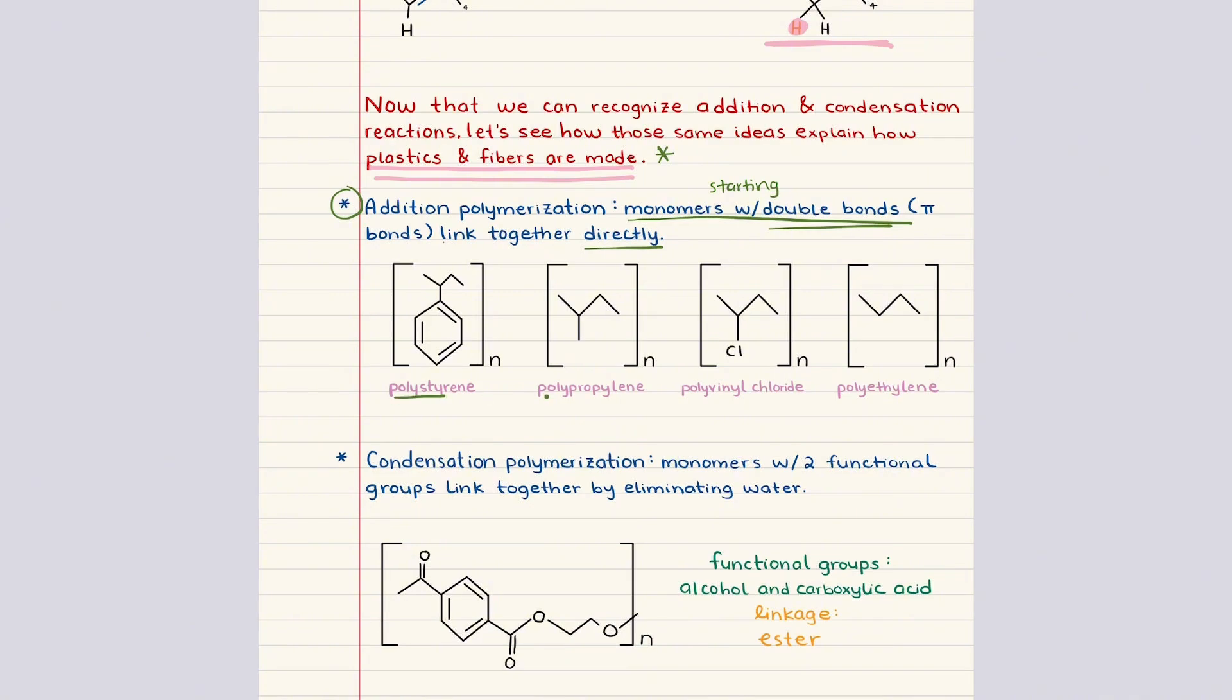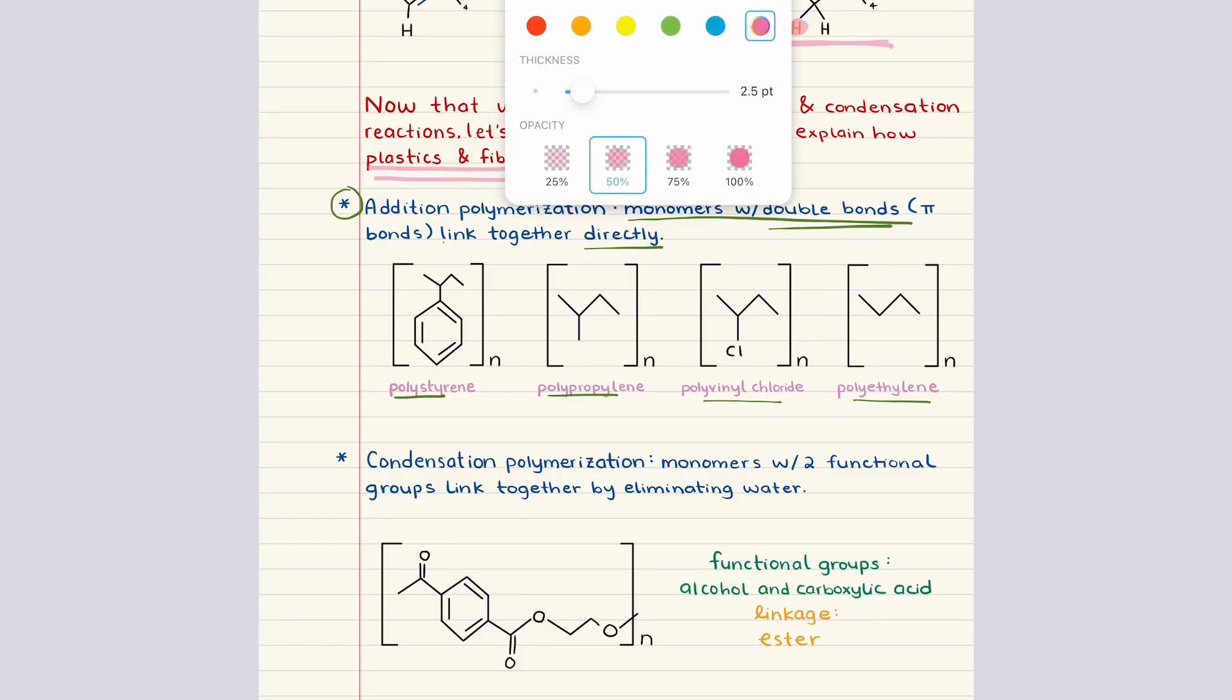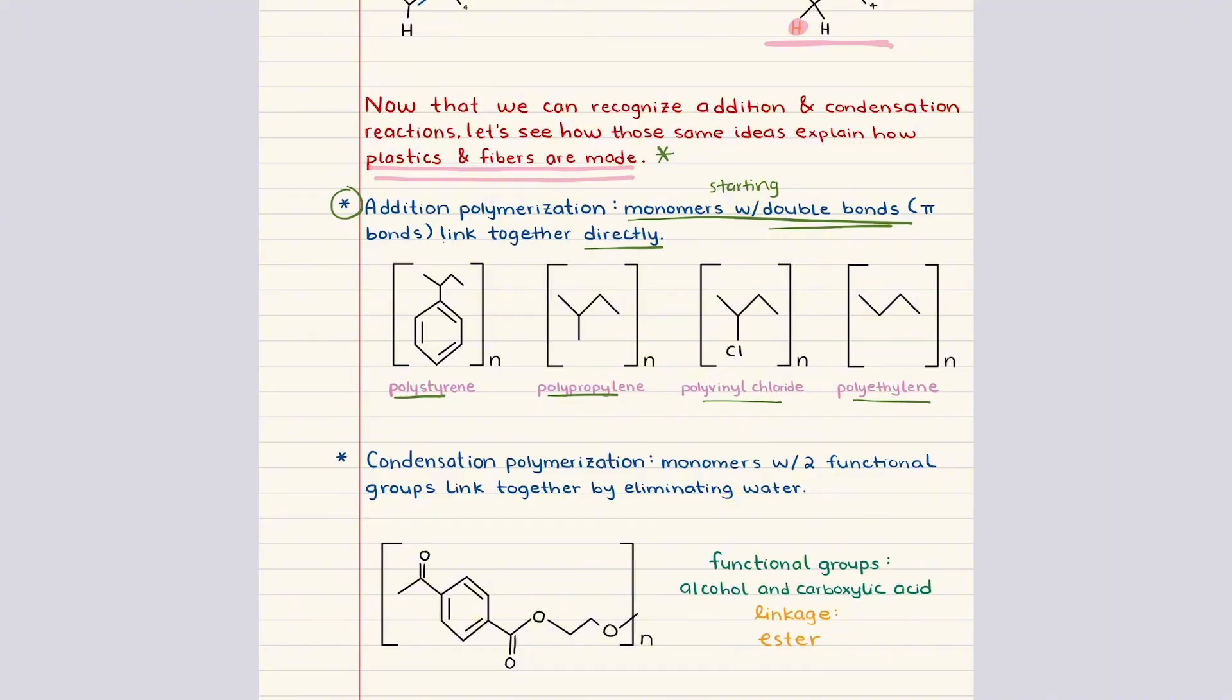Polystyrene, polypropylene, polyvinyl chloride, and polyethylene all form in this way. Even though their structures look different, the underlying pattern is the same. A monomer with a double bond opens up that double bond and attaches to the next unit and it creates a continuous carbon backbone. The letter N under each of these structures indicates that that pattern repeats many times to make the polymer.